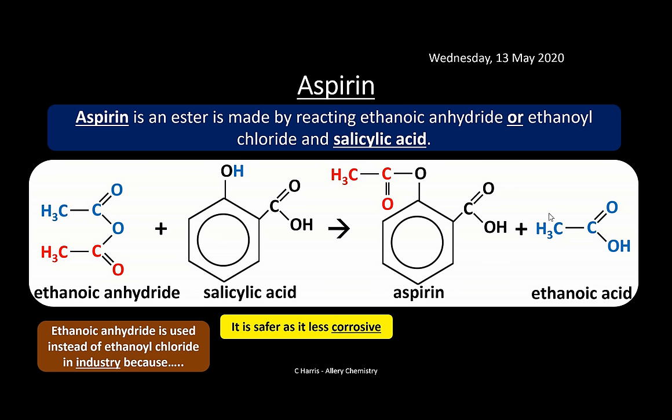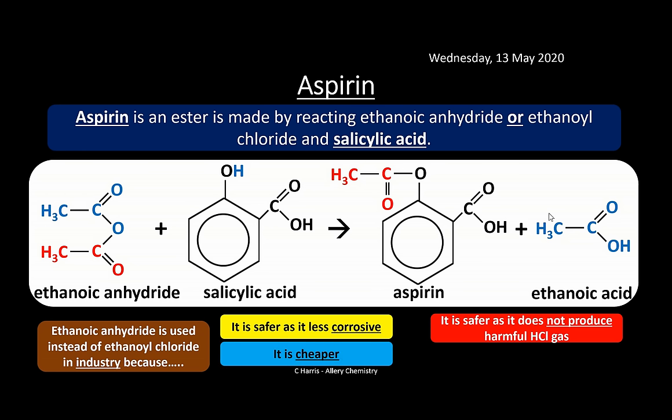Ethanoic anhydride is preferred over ethanoyl chloride in industry because it is safer — less corrosive, less reactive, and does not produce harmful HCl gas. It is also cheaper and the reaction is slower and more controlled, unlike the vigorous reaction of acid chlorides. From both economic and safety perspectives, ethanoic anhydride is clearly the better choice.